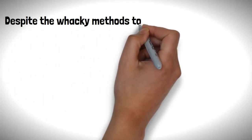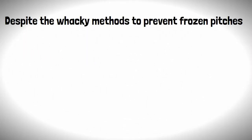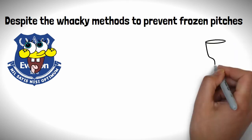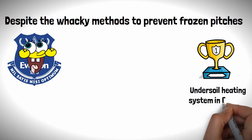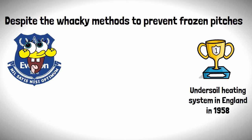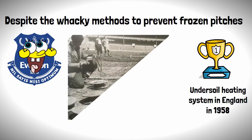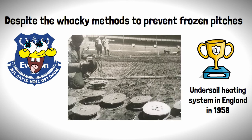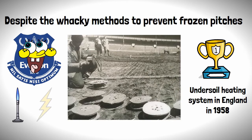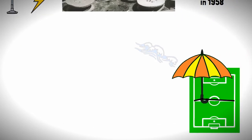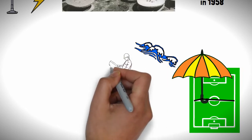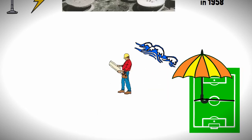Despite the wacky methods to prevent frozen pitches it was a certain Scouse club who would take the accolade of having the first under soil heating system in England in 1958. This system consisted of electric wires which were laid underneath the turf which would heat up when a current was run through them. The system worked so well the existing pitch drainage couldn't handle all the melting ice which resulted in the club having to install improved drainage systems.